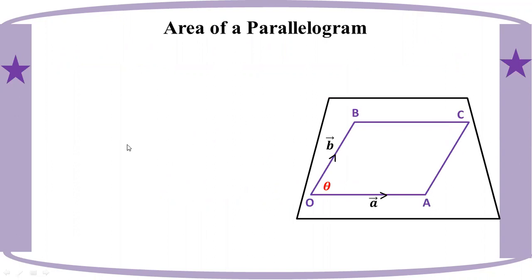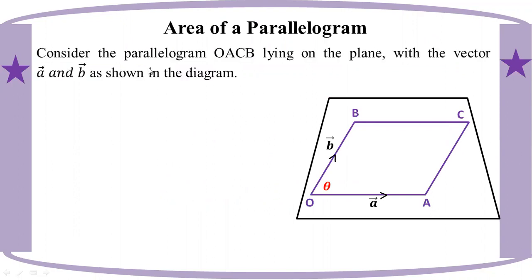Consider the parallelogram OACB lying on the plane, with vectors a and b as shown in the diagram. The parallelogram OACB is on the plane with vector a along OA and vector b along OB. The plane shows the parallelogram with these vectors.